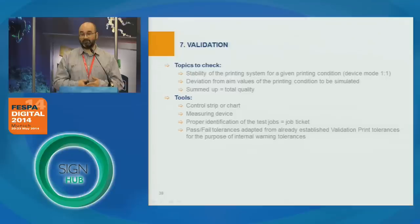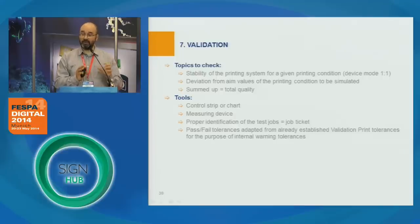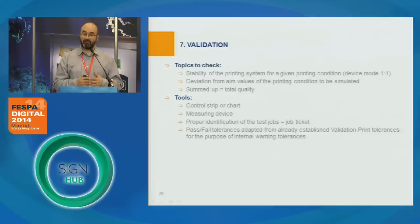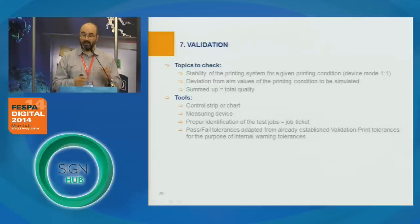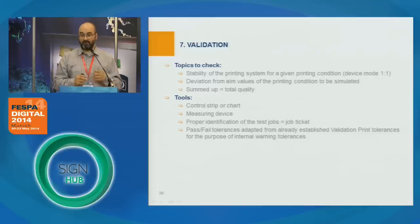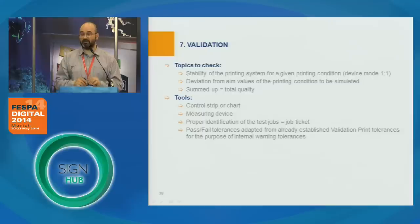To validate our result, we can evaluate in so-called device mode — how your printing condition behaves. You just report it to the aim values, and you can do this evaluation periodically to see if your printing equipment has drifted. Or you can evaluate from the point of view of color accuracy in simulation mode — how accurately your printing combination simulates your intent in the reference printing condition. These two aspects summed up give us the total quality — a very complete way to control and verify your output printing condition periodically to establish if it's still okay or needs readjustment.